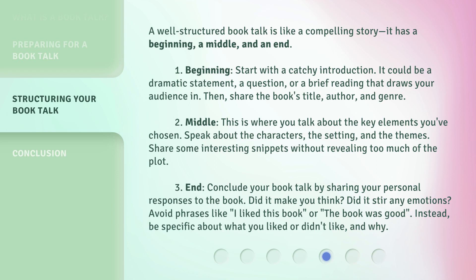Middle: This is where you talk about the key elements you've chosen. Speak about the characters, the setting, and the themes. Share some interesting snippets without revealing too much of the plot. End: Conclude your book talk by sharing your personal responses to the book. Did it make you think? Did it stir any emotions? Avoid phrases like 'I liked this book' or 'The book was good.' Instead, be specific about what you liked or didn't like, and why.